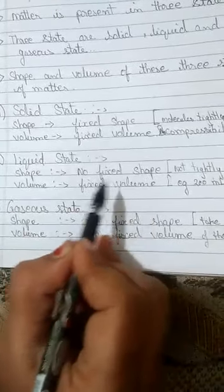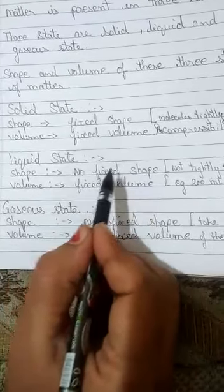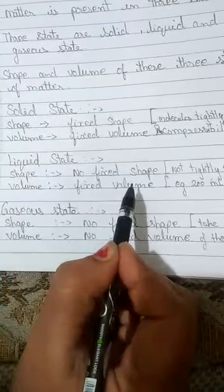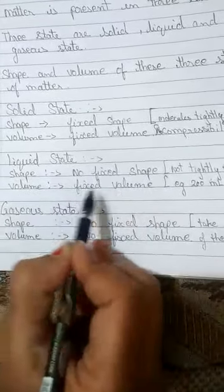For volume, we cannot change the volume. If we take 200 ml of water in a bowl, it will be 200 ml. The same water in a glass will have the same volume, 200 ml. So volume is fixed.